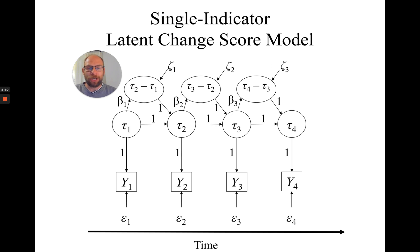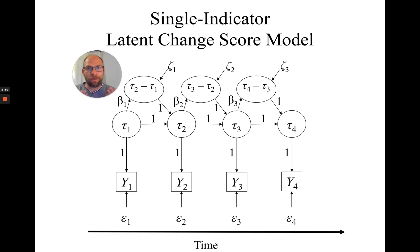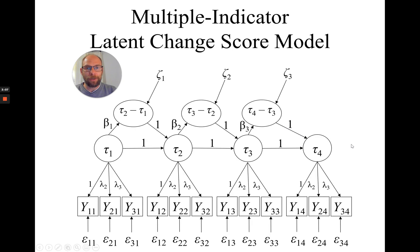In a single indicator latent change score model you have true score or latent state variables at each time point, and then change score variables — tau 2 minus tau 1, tau 3 minus tau 2, tau 4 minus tau 3. Such a model can work if you have at least four time points, allowing you to model changes in latent variables and correct for measurement error even with a single indicator.